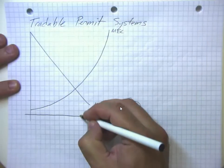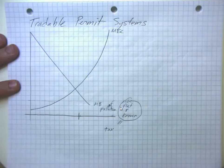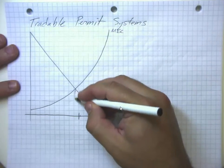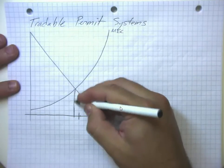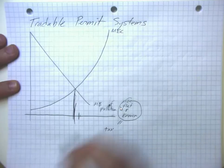Well then what we do here is we issue a certain number of permits. Now you'll notice that if we issue this amount of permits, we get to the efficient outcome.